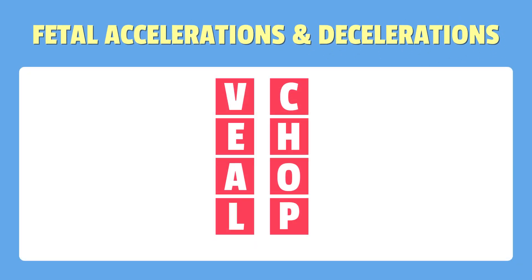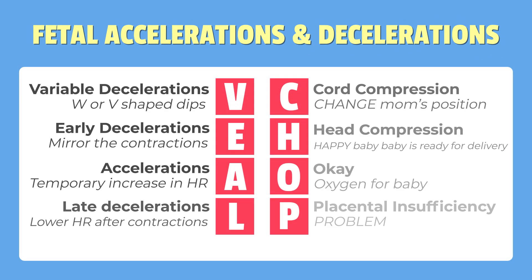Now let's break down our mnemonic, VEAL CHOP. Each letter pair represents a type of heart rate change and its potential cause. V is for variable decelerations, E is for early decelerations, A is for accelerations, and L is for late decelerations.